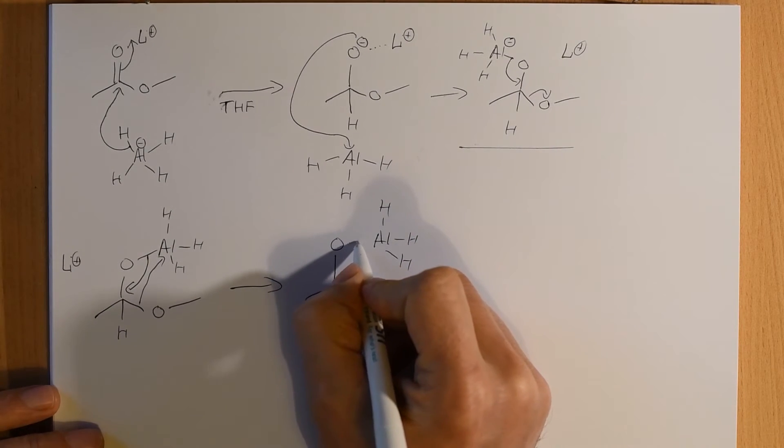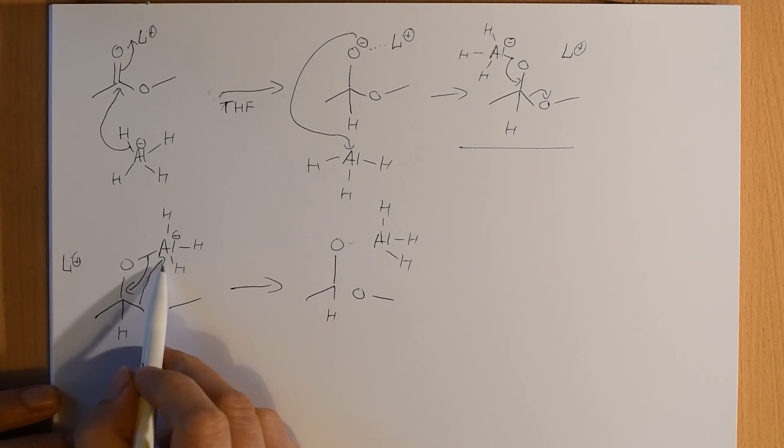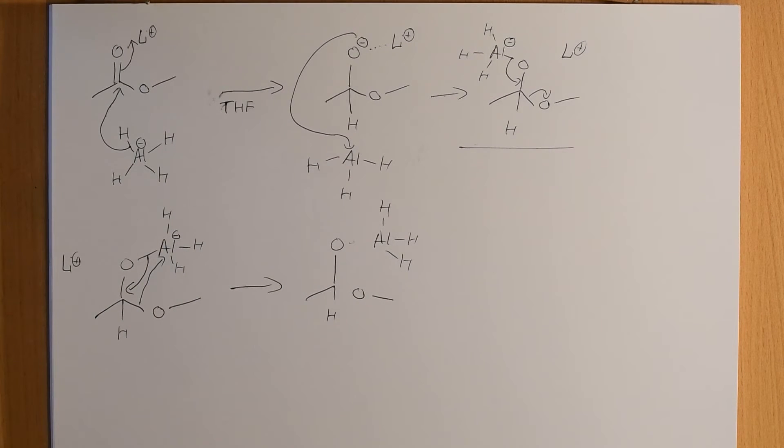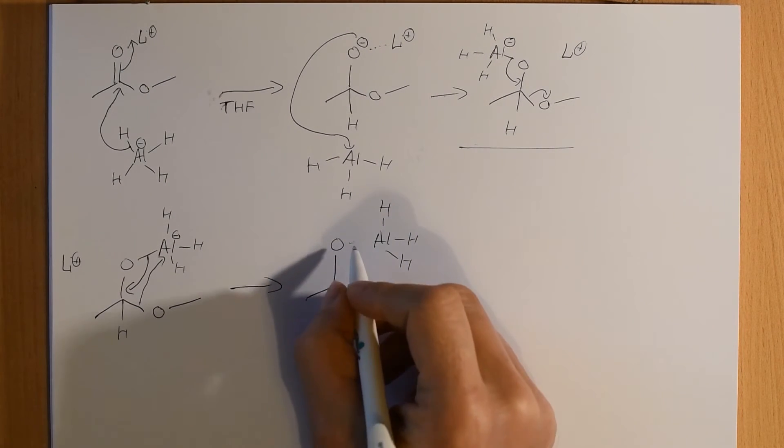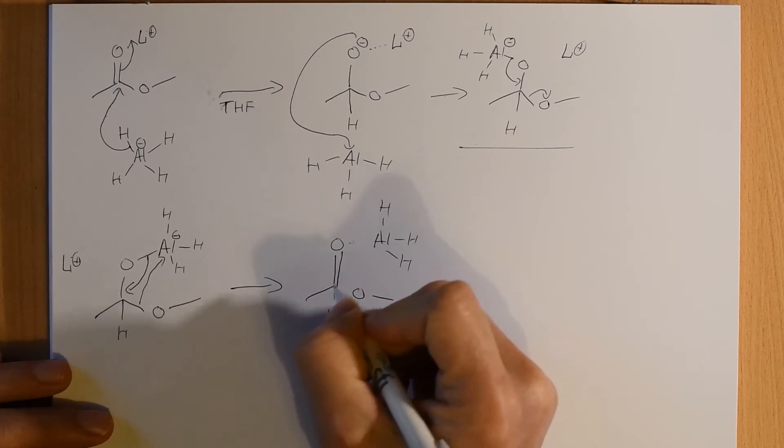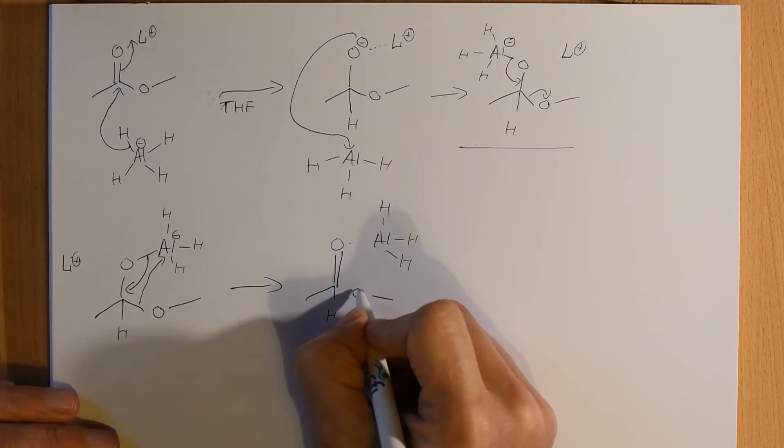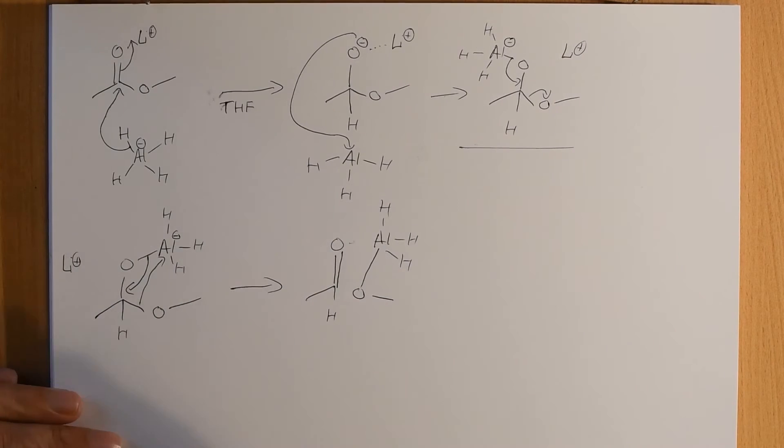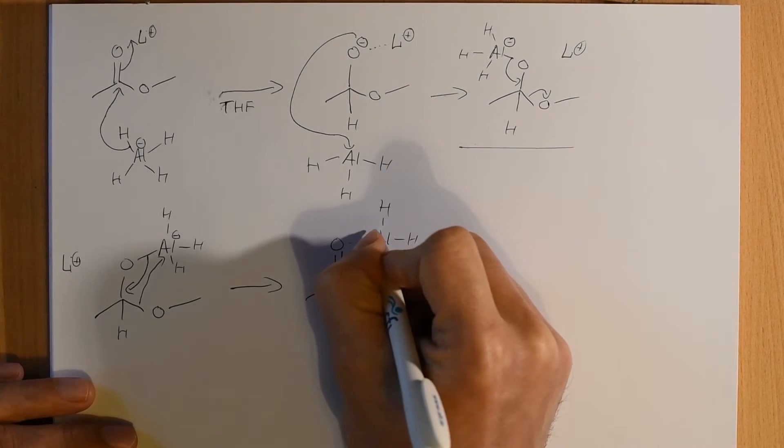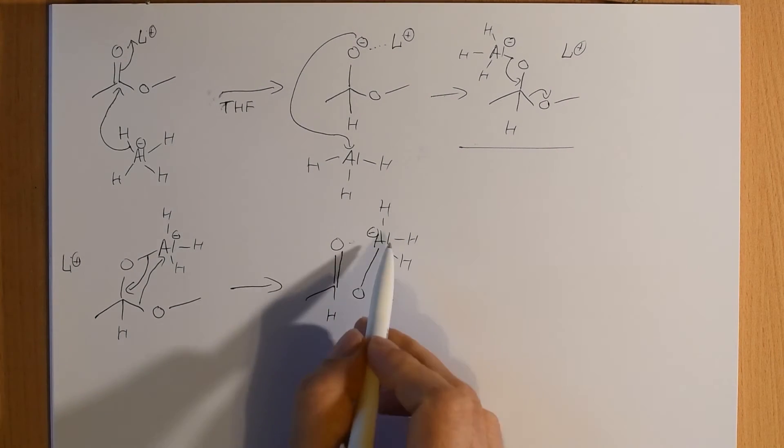We're going to take that pair of electrons there, I'll remember to put in my negative charge. We're going to take this pair of electrons here and reform carbon oxygen double bond. We're going to take that pair of electrons there and form aluminum oxygen bond and we still have our methoxy aluminum hydride.